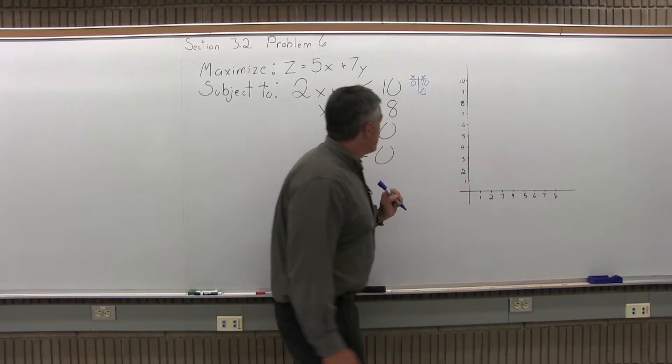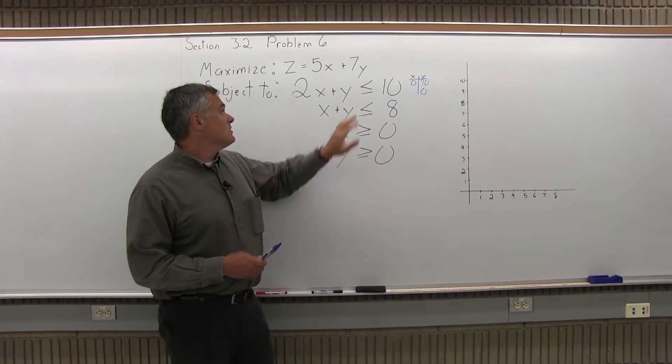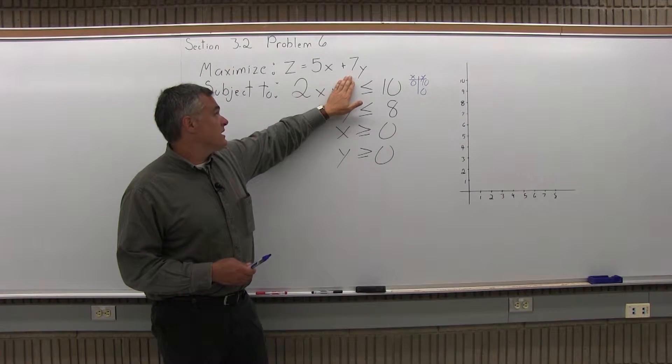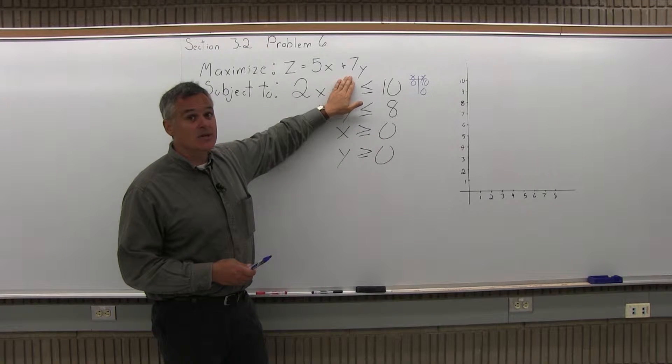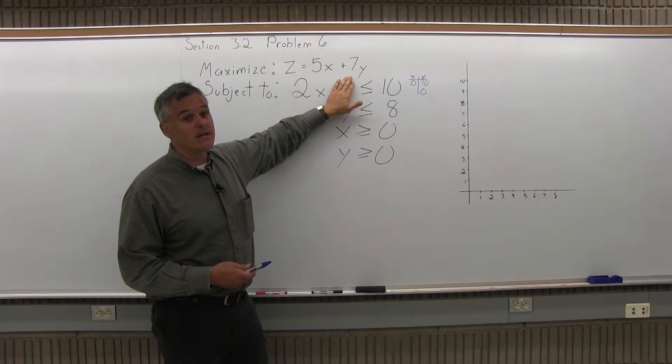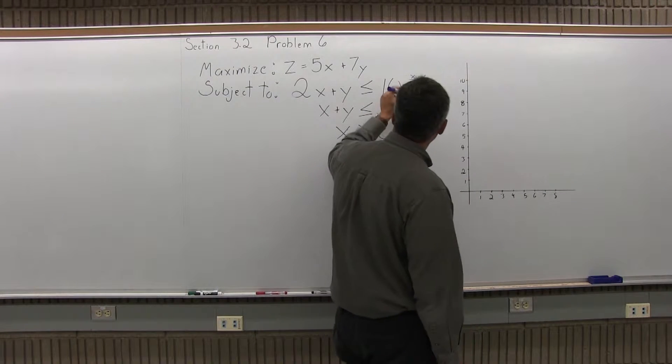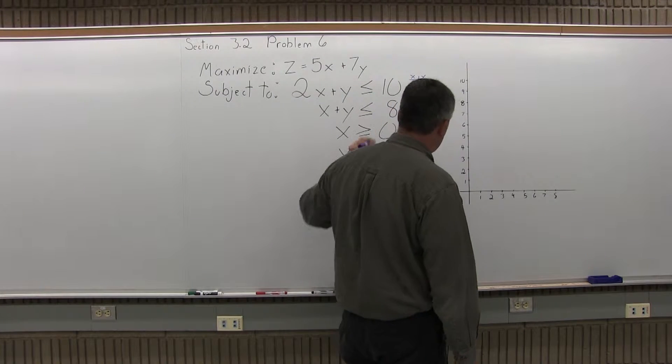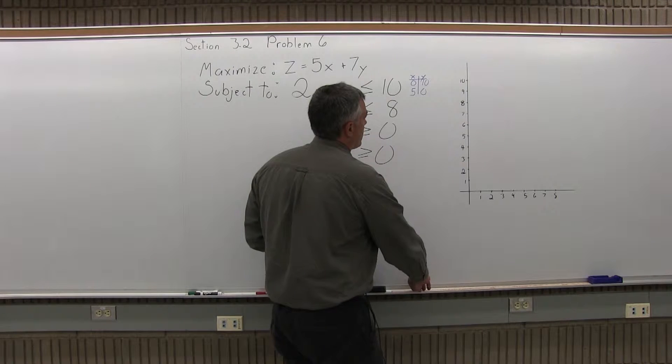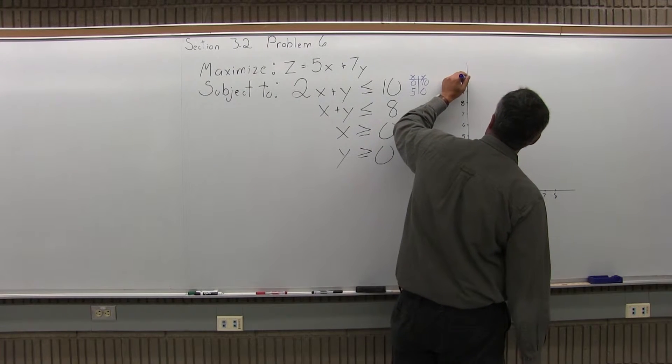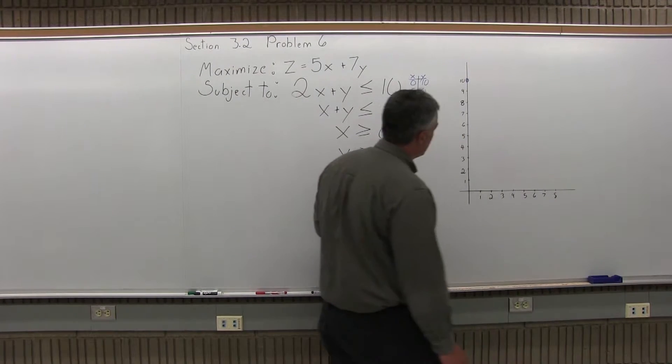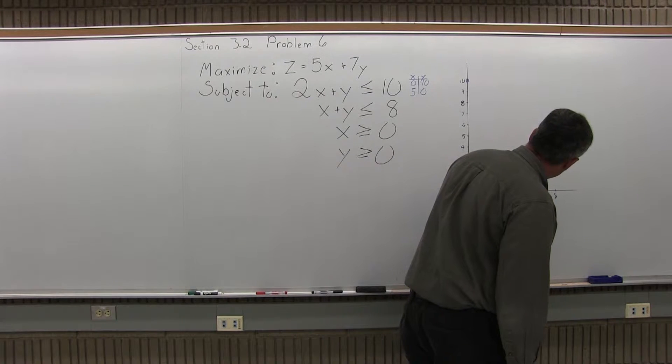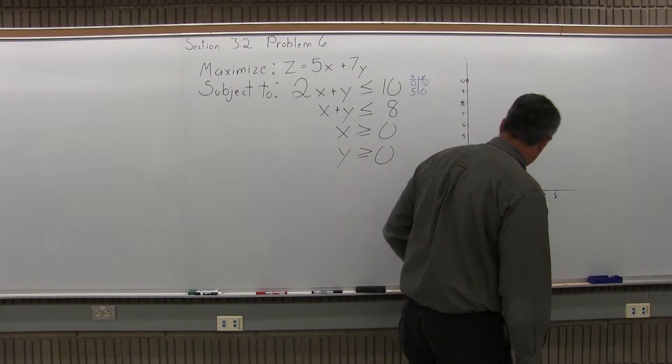I'll start by letting x equals 0. So if x is 0, the 2x essentially just goes away, and I have y equals 10. And I can generate a second point by letting y equals 0. Again, I'm pretending it equals 10, not less than. So I have 2x equals 10, so the x would have to be 5. So I have 0, 10, and 5, 0. I'll put that on a graph. 0, 10 is over 0, up 10. And 5, 0 is over 5, up 0.